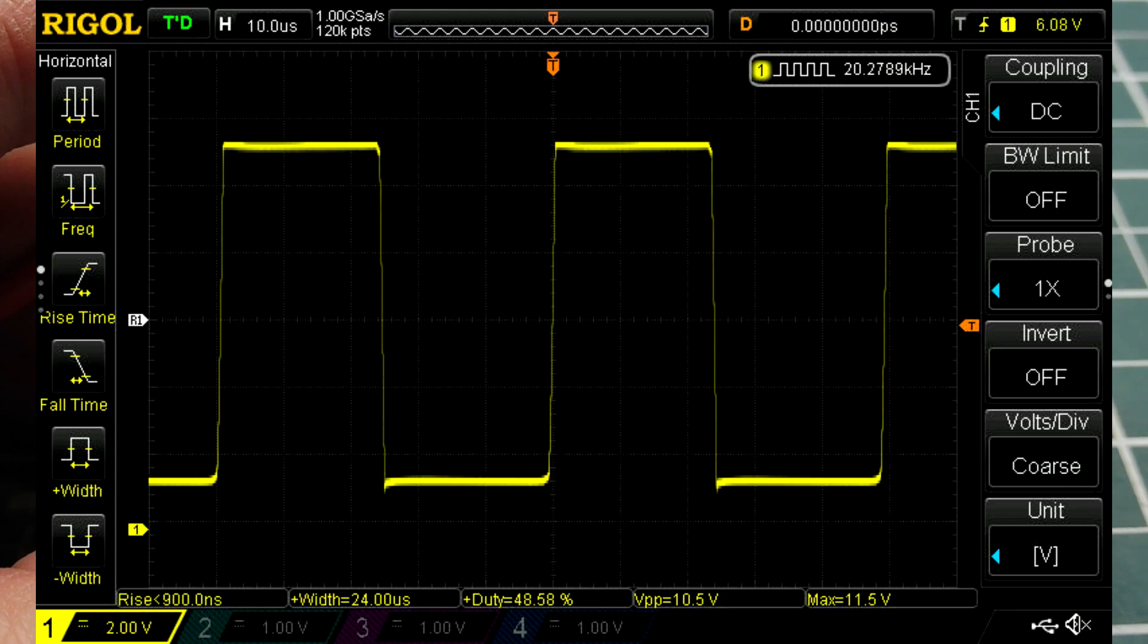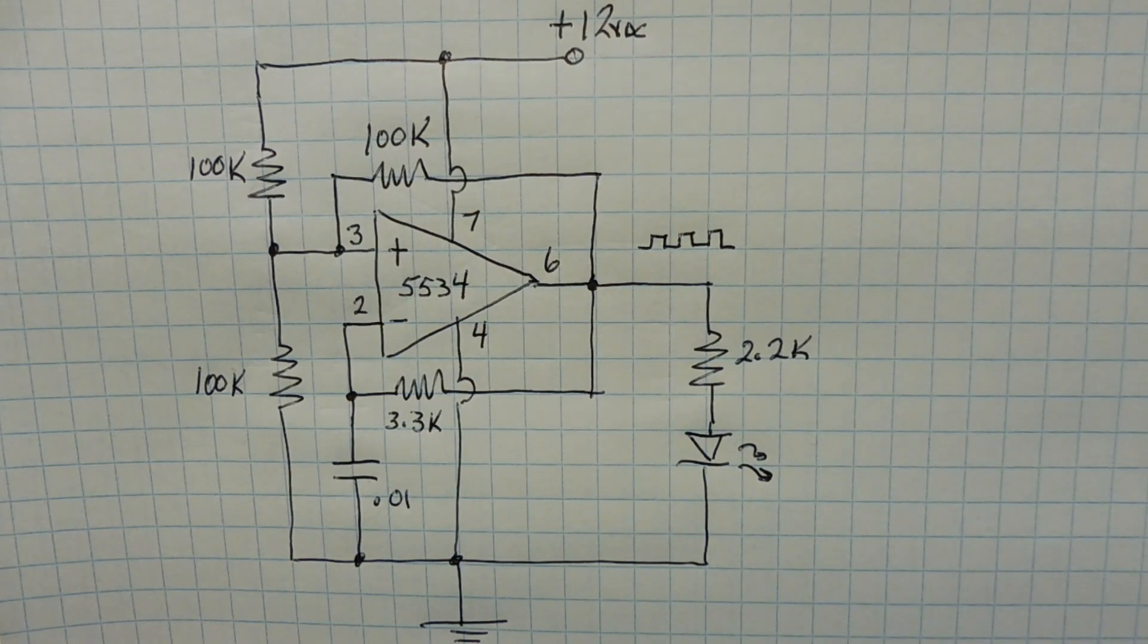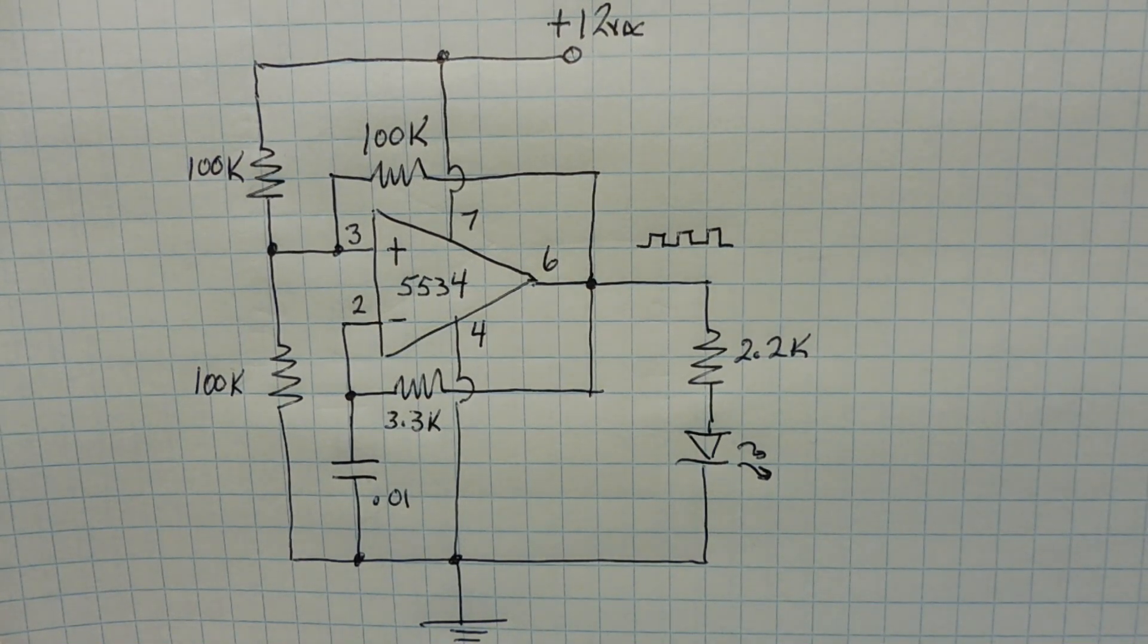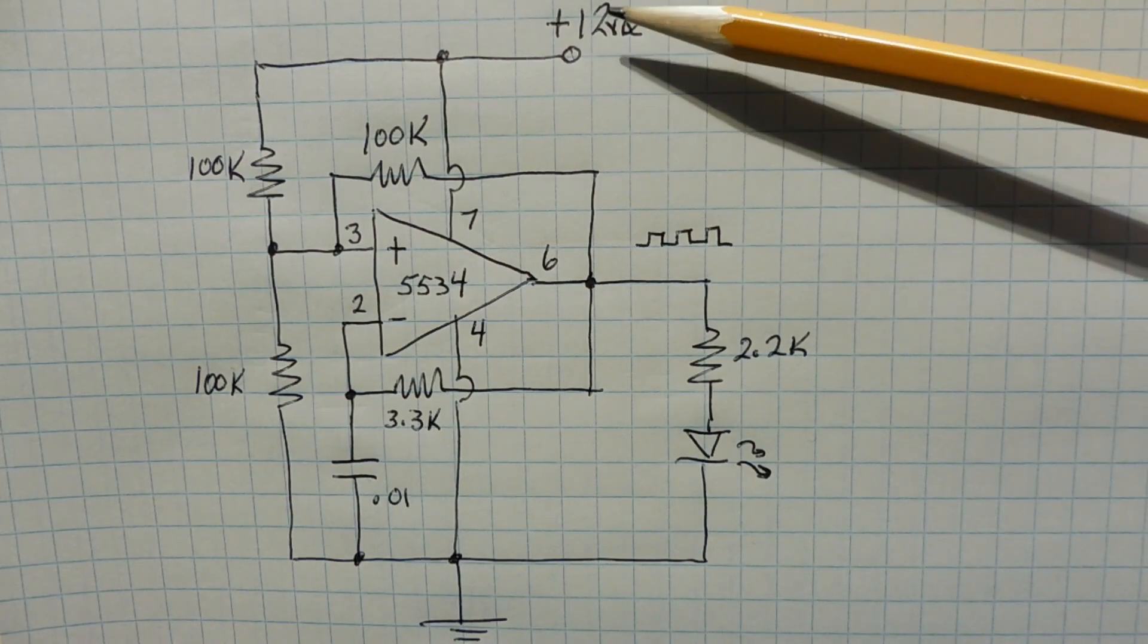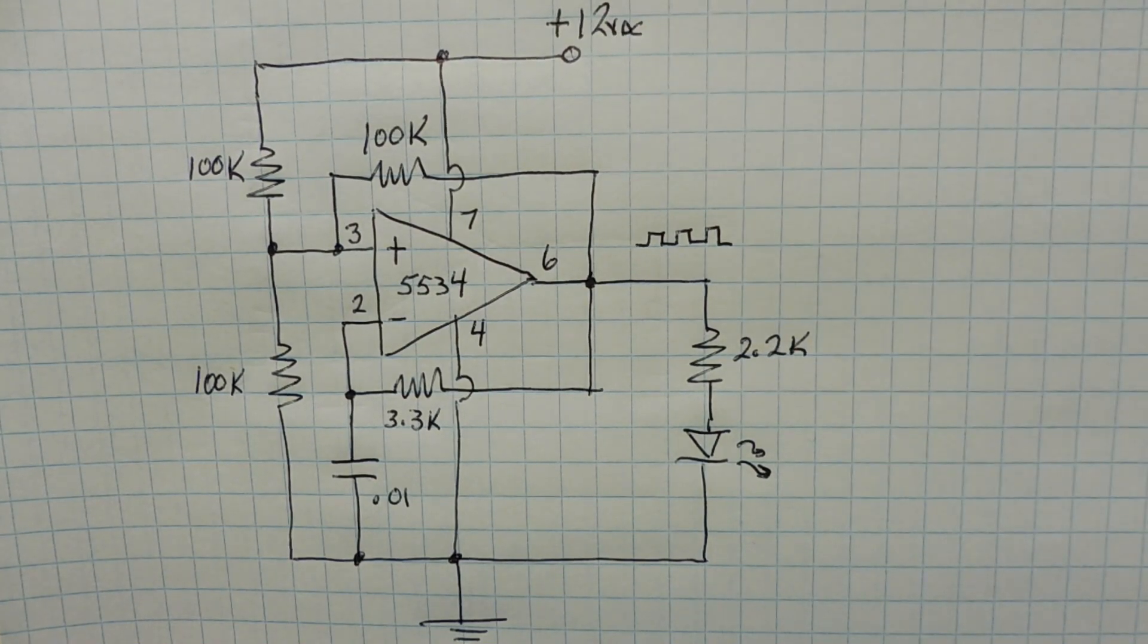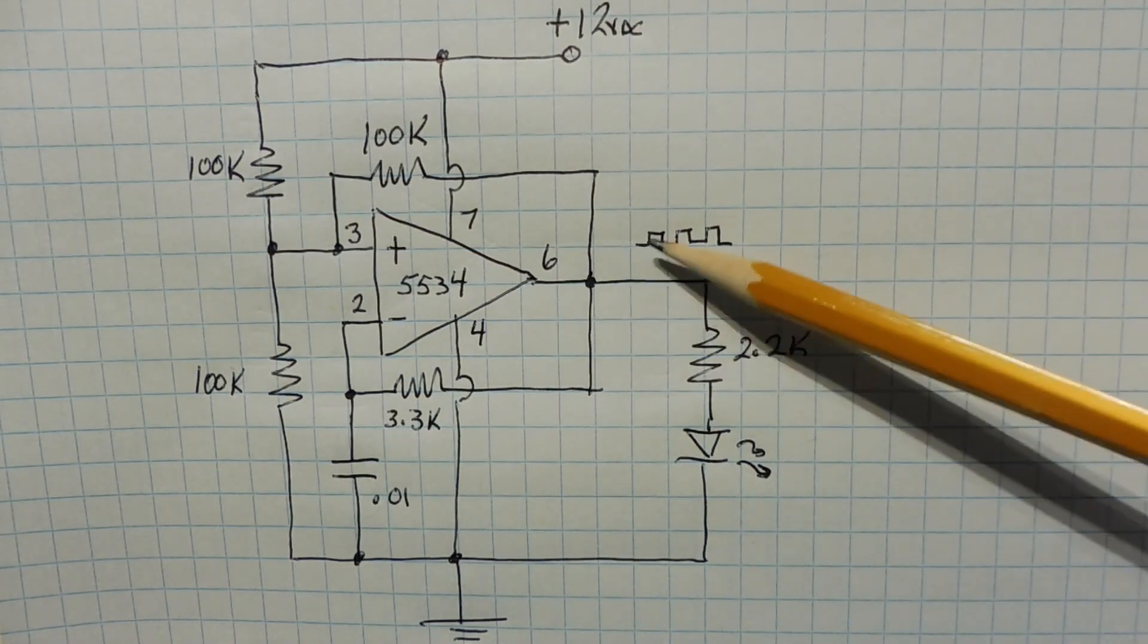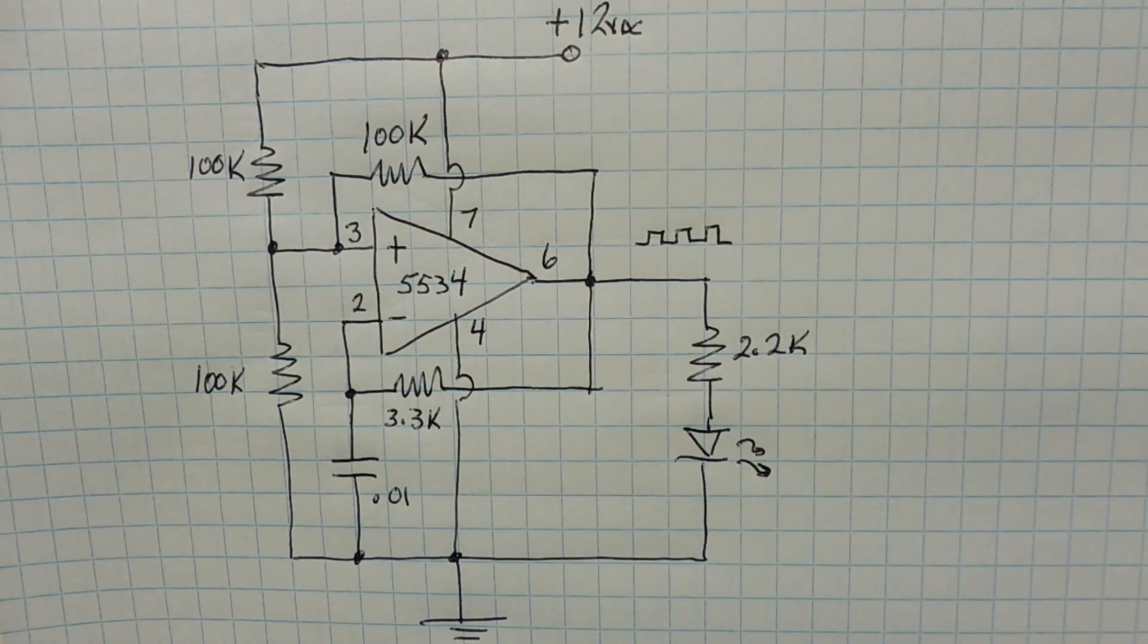So next we'll have a look at the schematic diagram and check out how the circuit works. Okay, here's the schematic diagram of my op-amp oscillator, which I built on my breadboard. And it's powered by 12 volts, it's VCC, so it's a single supply circuit. The output is pin 6, so we'll get our square wave output, which is feeding our LED for indications.